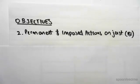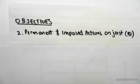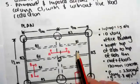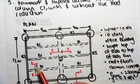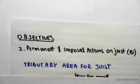Hey guys, the objective with this video is to find the permanent and imposed actions on joist B1. So just to show you where we're at, looking at these joists B1, the first thing we need to do is find the tributary area for the joist.